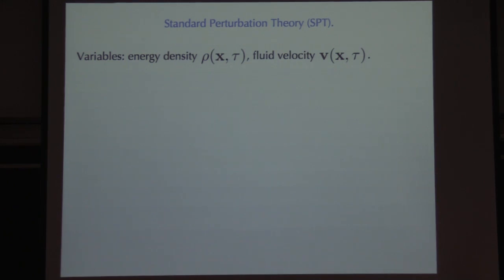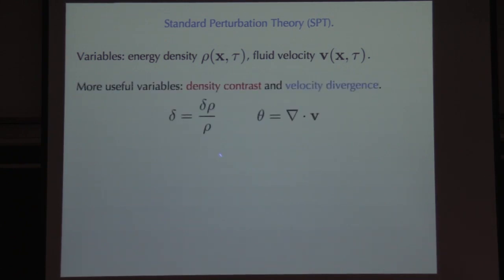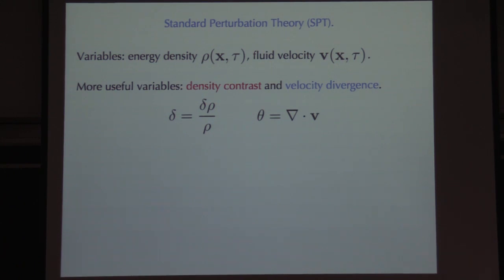Contrasting EFT with standard perturbation theory: nobody starts from point particles for large-scale structure; we start already assuming a fluid and then smooth it further. The variables we work with are delta (the density contrast delta-rho/rho) and theta (the divergence of the velocity field — the curl piece dies away quickly, so all we need is the divergence). We track the evolution of these two scalar fields through the universe.